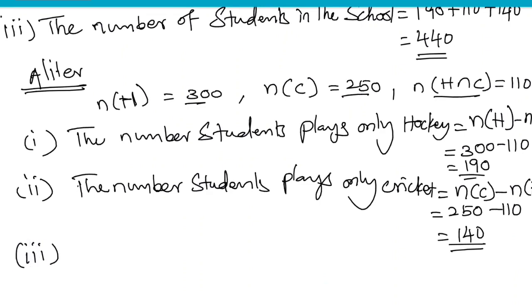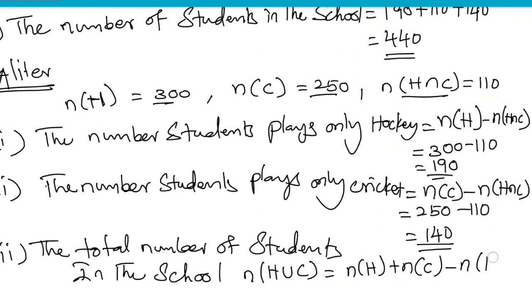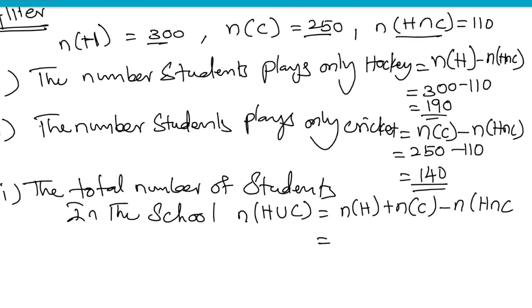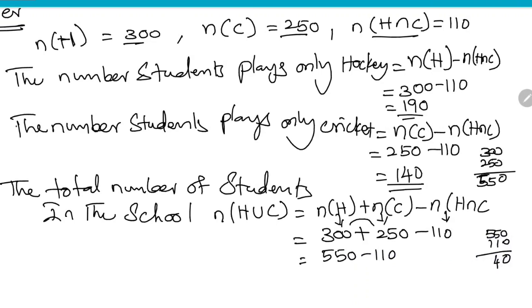Third question answer: the total number of students in the school. n(H∪C) equals n(H) plus n(C) minus n(H∩C), that is equal to 300 plus 250 minus 110. First, 300 plus 250 equals 550, then 550 minus 110 equals 440. So the total number of students in the school is 440.